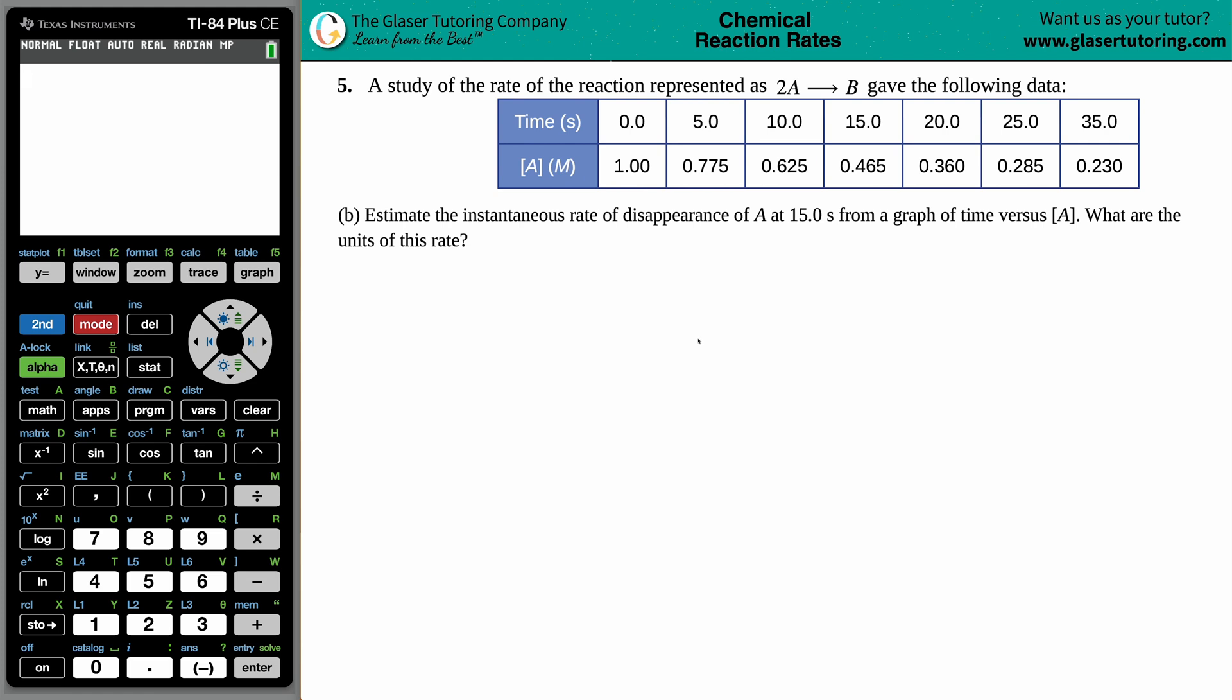Number five, a study of the rate of reaction represented by 2A yields B gives the following data. So we have this data chart as time is going on, the concentration of A seems to be dropping because these values keep decreasing over a certain amount of time. Now for letter B, it says estimate the instantaneous rate of disappearance of A at 15.0 seconds from a graph of time versus the concentration of A. What are the units of this rate?